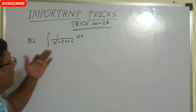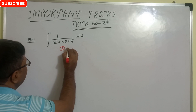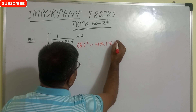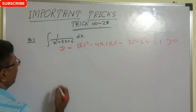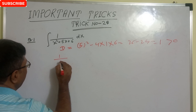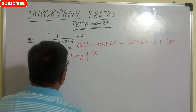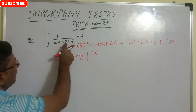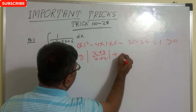Integration of 1 upon x squared plus 5x plus c. For this type of question, first find the discriminant and check whether it is greater than 0 or less. So b squared minus 4ac is 25 minus 4, that is greater than 0. The technique is: 1 upon root of discriminant — discriminant is 1, so 1 by 1 — and then log of (x minus the greater root) upon (x minus the smaller root). The roots are minus 2 and minus 3, so greater is minus 2. Answer: log of (x plus 2) upon (x plus 3), plus c.